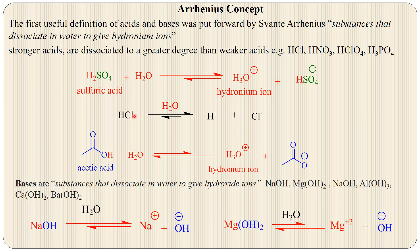We can write it as HCl giving H⁺ and Cl⁻, or acetic acid giving H₃O⁺ hydronium ion and acetate ion. All these reactions are reversible and equilibrium is established. Strong acids tend to ionize fully and produce more hydronium ions, while weak acids are less ionized and produce fewer hydronium ions.